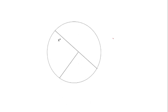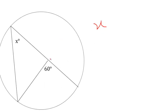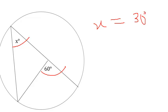Try this question: if the center angle is 60 degrees, find the circumference angle. Since the circumference angle equals the center angle divided by 2, the answer is straightforwardly 30 degrees.